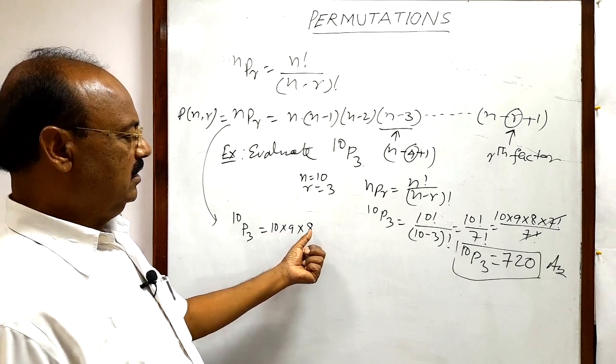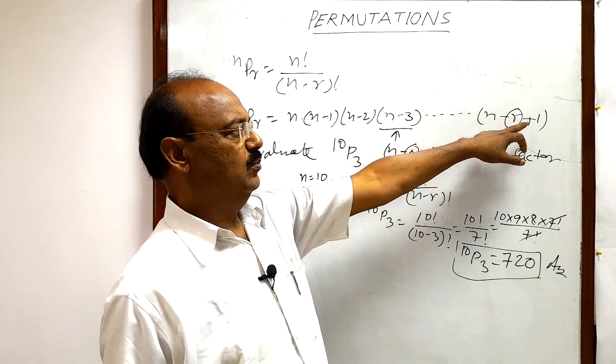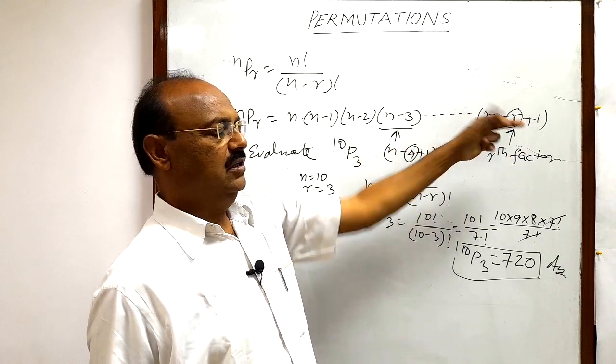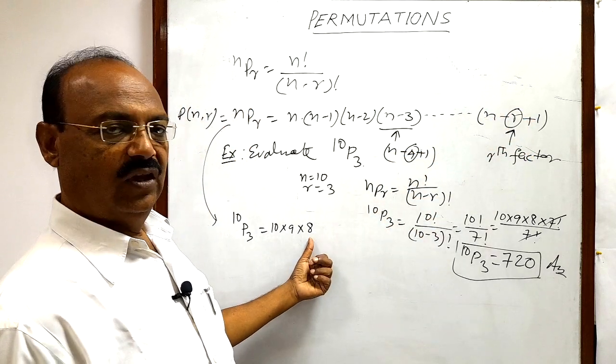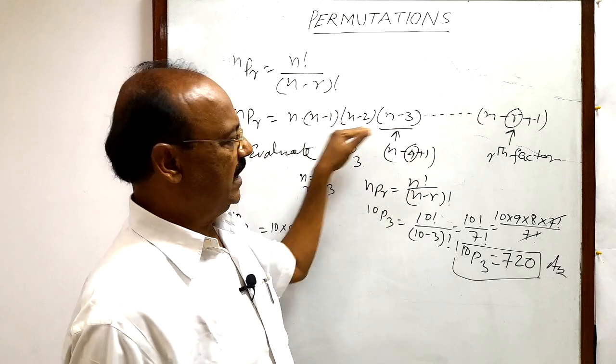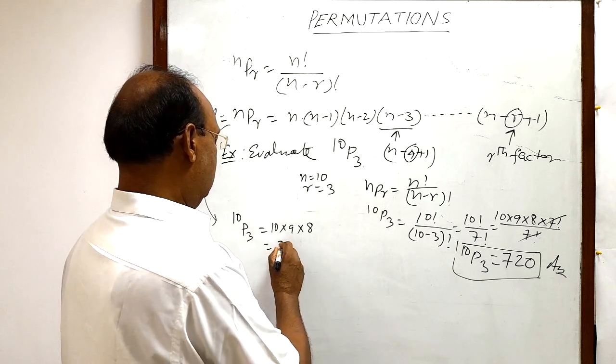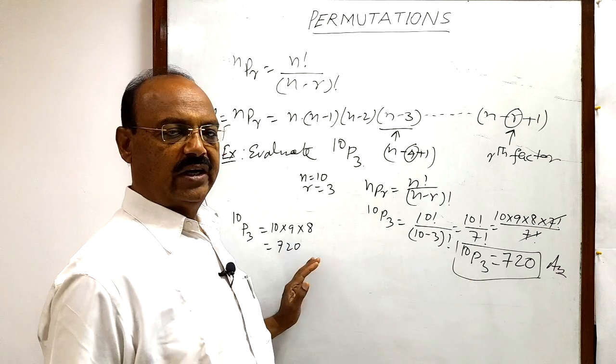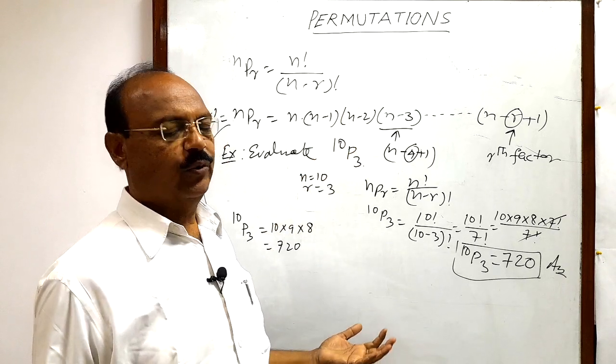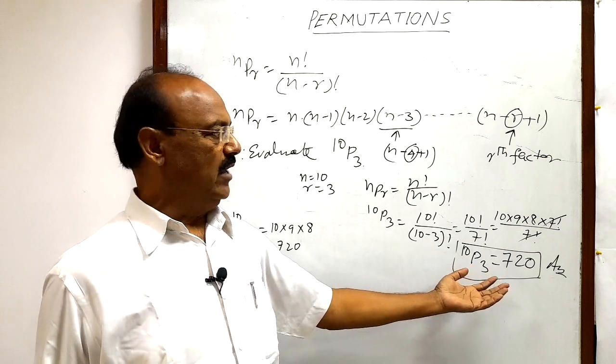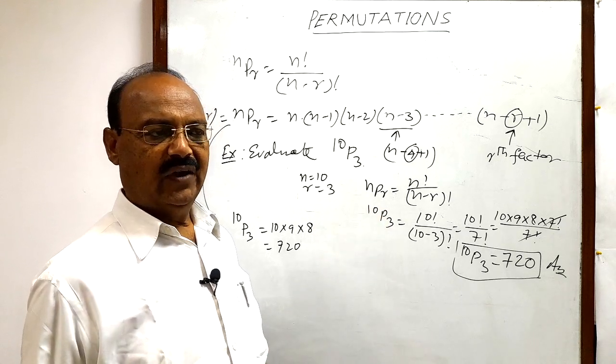And the last factor, 8, is in this form: N minus R plus 1. 10 minus 3 plus 1. 10 minus 3 here is 7 plus 1 is 8. So the last factor is 8. So we can use this expansion also here for solving this problem. Same answer we are getting in both cases, only the formula is different. Both formulas are the same. So this is the answer. I hope you have understood it. The question is very simple. We will see some more problems in other videos.